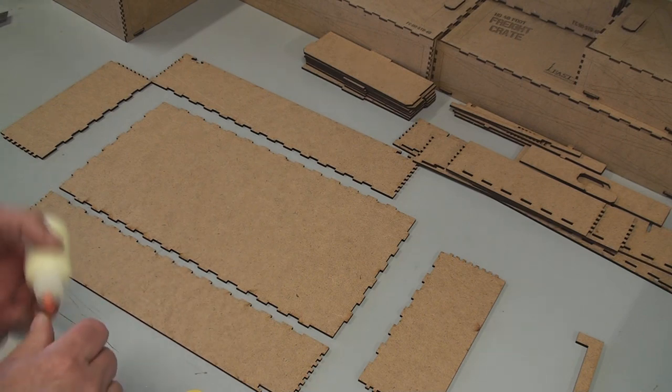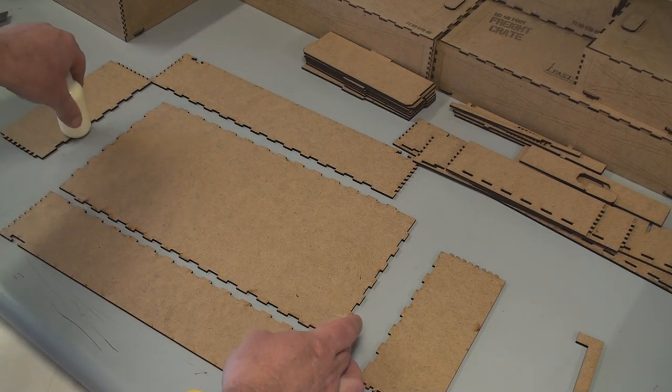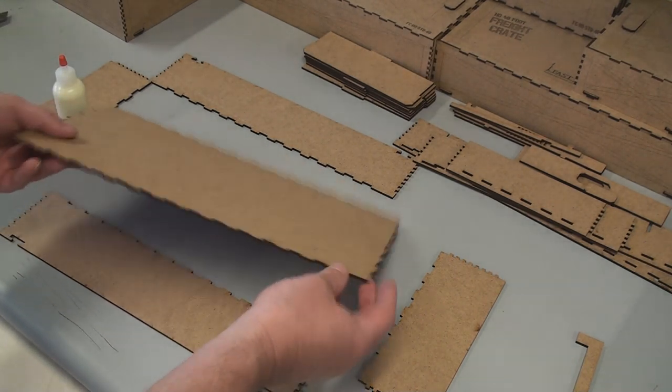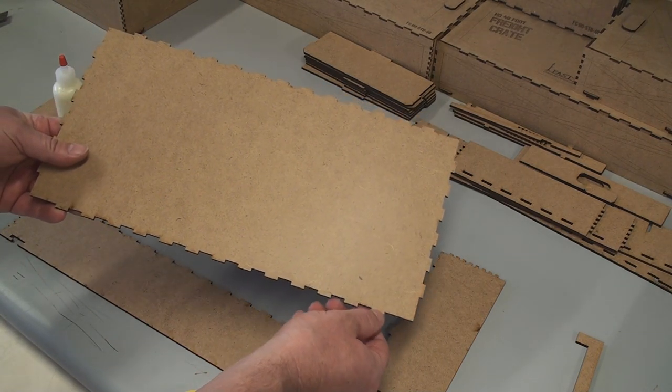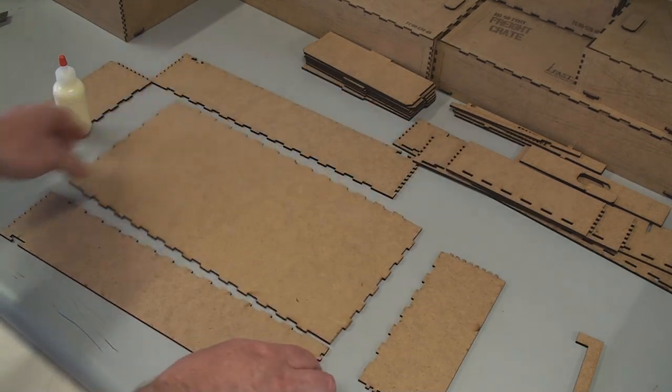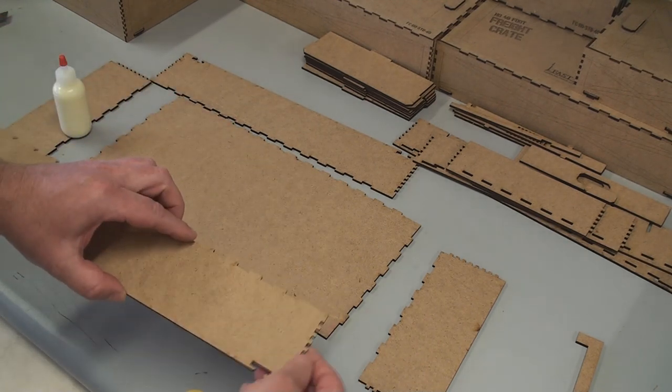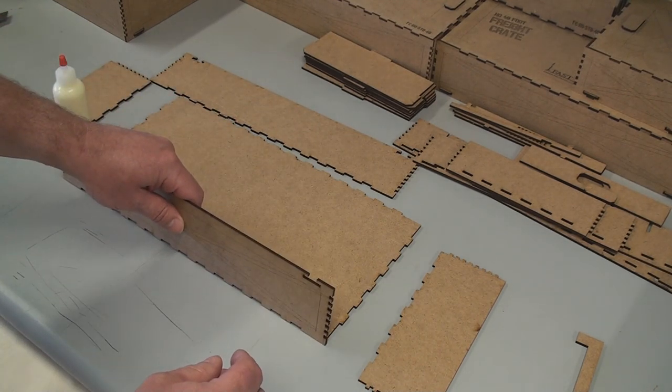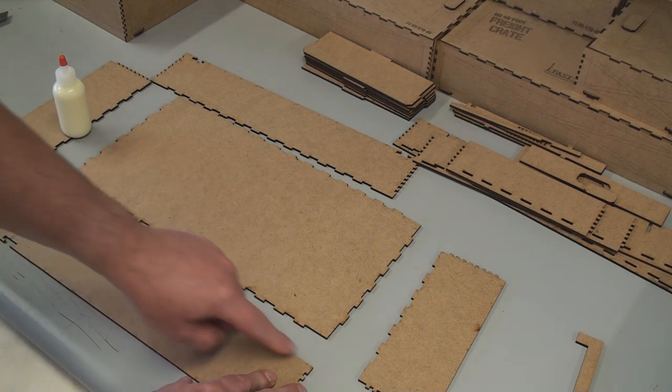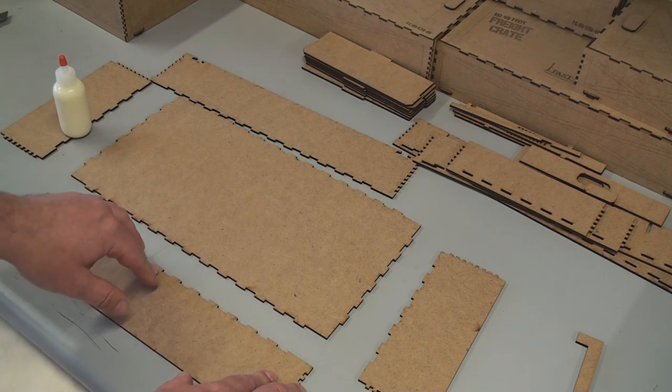Now we need to apply glue only on the tabs. So when I say a tab, anything that's protruding out. I'm going to be putting some glue all along these tabs here, and along these tabs on the bottom, and along the tabs on the side. And then assembling it like that. That way we'll have glue on all the surfaces that are going to come in contact with each other.